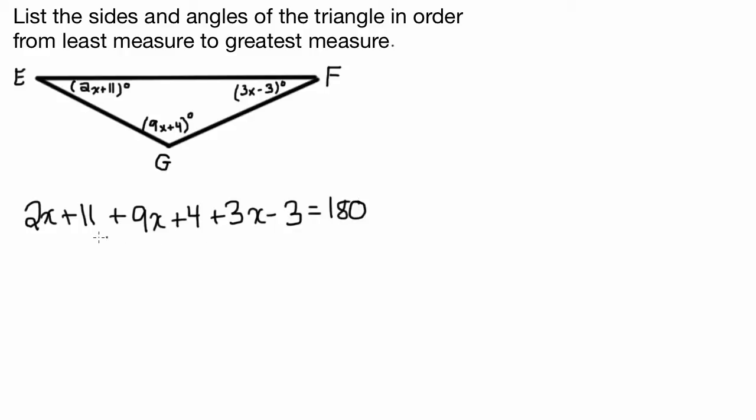So 2x plus 11 plus 9x plus 4 plus 3x minus 3 equals 180. And then we're just going to solve for x. So we're going to combine like terms here. So I have 2x, 9x, and 3x. So that's going to sum to 14x. And then I've got an 11, a 4, and a negative 3. And so that sums to 12. And that equals 180.